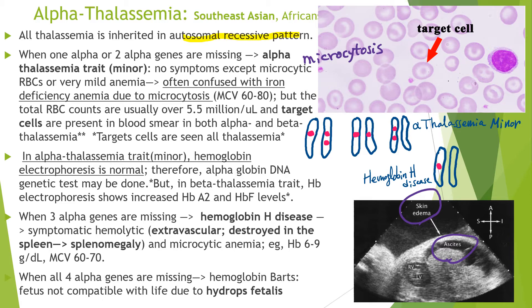Alpha-thalassemia is caused by defective alpha-globin genes, resulting in low or absent alpha-globin synthesis. It is especially prevalent in Southeast Asia, such as Vietnam, Thailand, Indonesia, the Philippines, and in Africa.